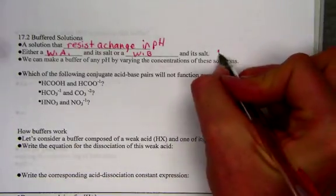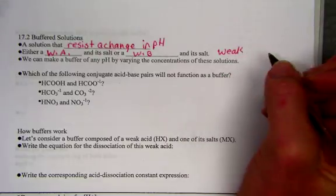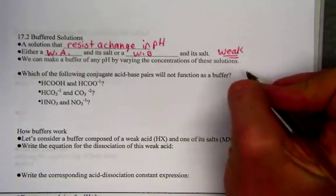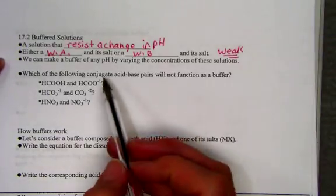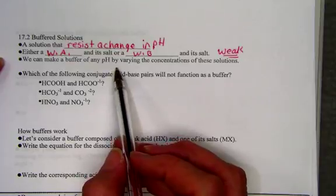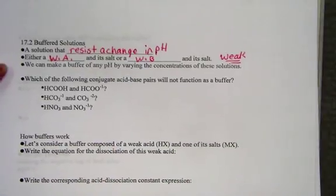Notice that I have said they must come from weak acids or weak bases. That eliminates any type of buffered system coming from strong acids or strong bases. And we can make a buffer for any pH by simply varying the concentrations of these solutions.